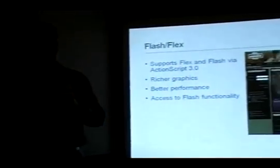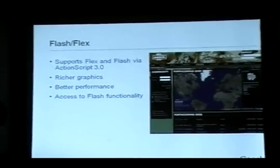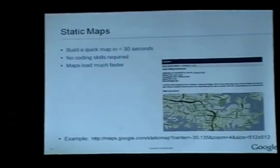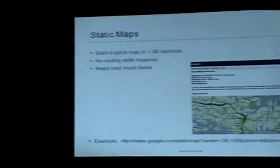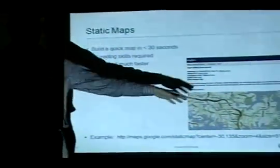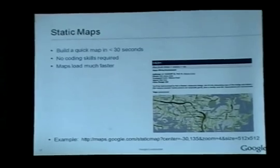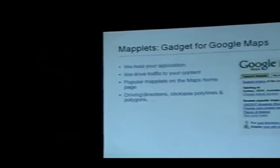If you're a Flash developer, there are solutions available for Flash and Flex — people writing ActionScript can take Google Maps and embed them in a website that consists of Flash animations. Static Maps is a way to get a very simple static map image on your website. If you're not a programmer, it's very simple to use and takes less than 30 seconds — just a simple URL and you've got a map. It's also a great way to get maps on mobile websites.